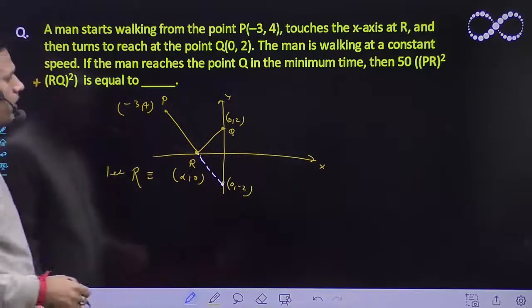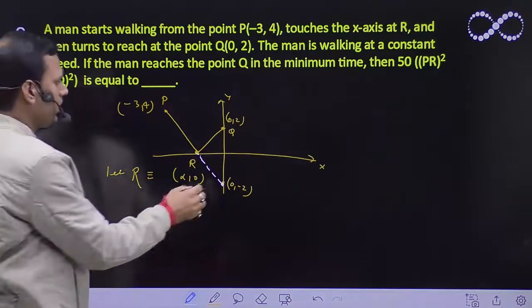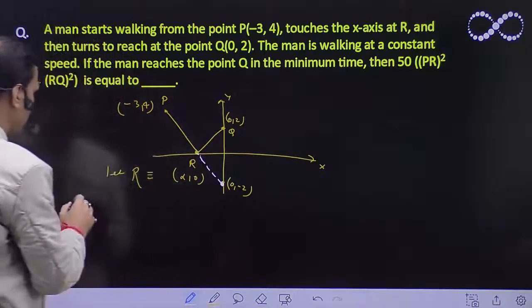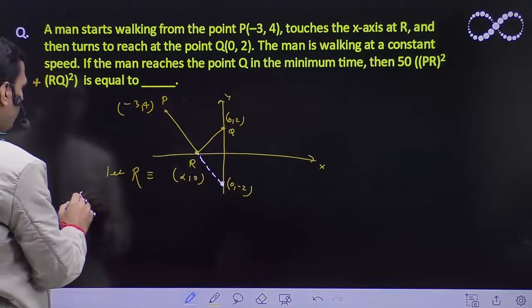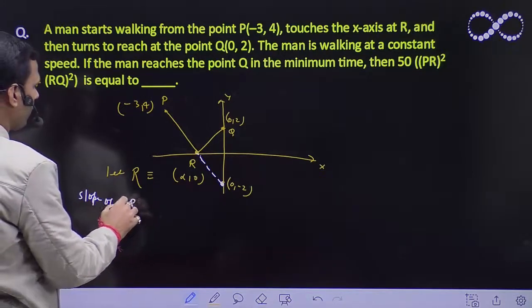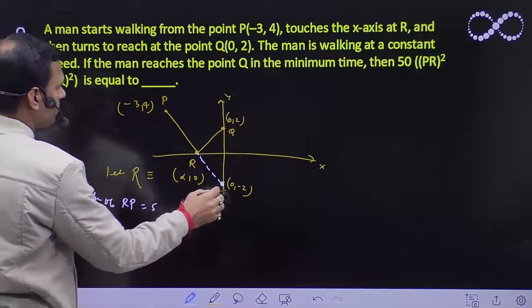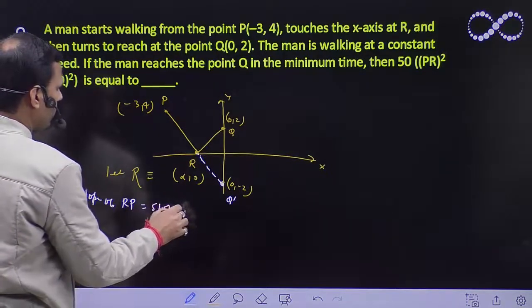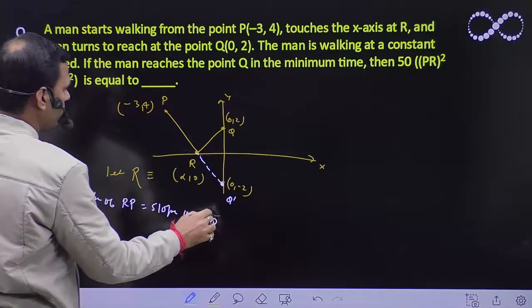If we join this, it will form a straight line. This straight line means they will be collinear. The slope of RQ' will equal the slope of RP.